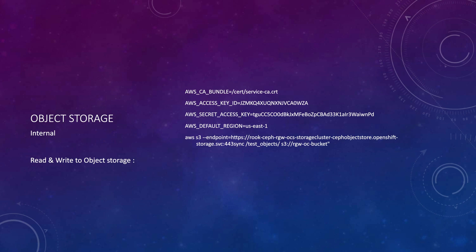If you want to read from the object store into your local folder, then you simply reverse the last two parameters. That is how the AWS CLI works — the S3 protocol based AWS CLI can read and write data from the object store. This is the high-level method to use the local object store in OpenShift Data Foundation.